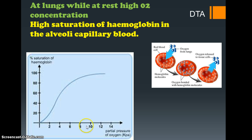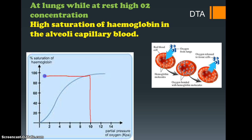Along the x-axis we have the values of partial pressure of oxygen — so 10 represents 100, 6 is 60, and so on. If we have a high partial pressure of O2, let's say this is the site of the lungs, and we go up along the curve and take it across, we can see the saturation of hemoglobin. At this site, with a high partial pressure of oxygen, there is almost full saturation of each hemoglobin molecule.